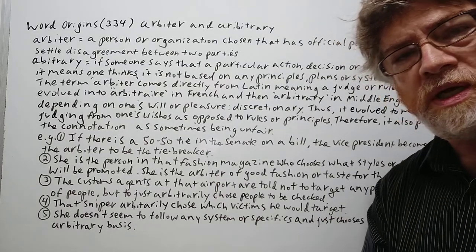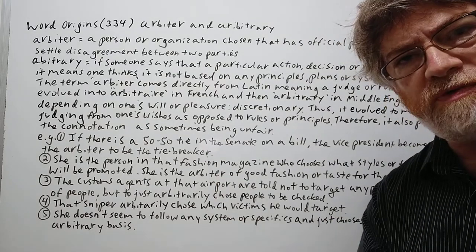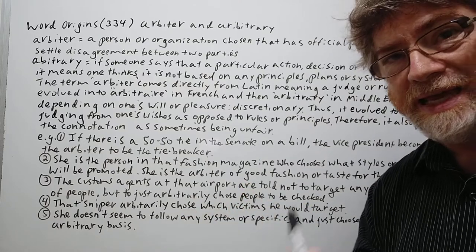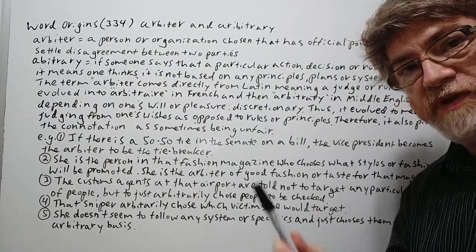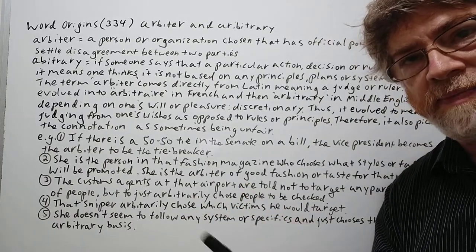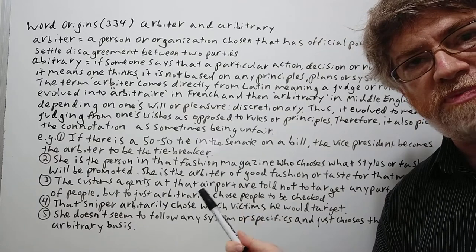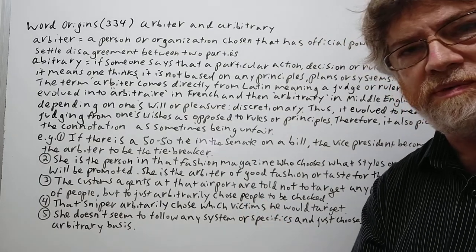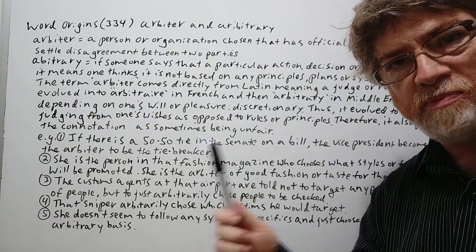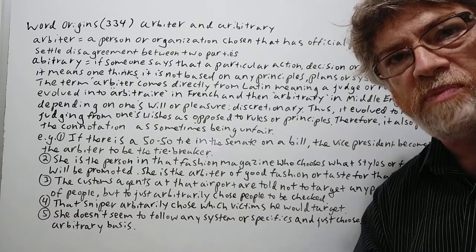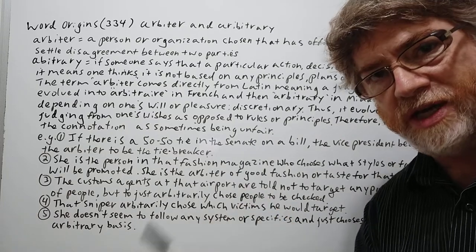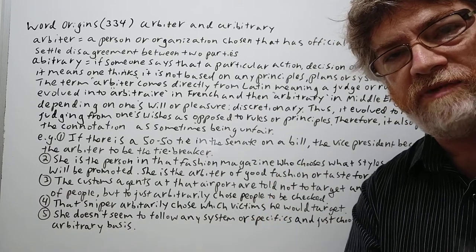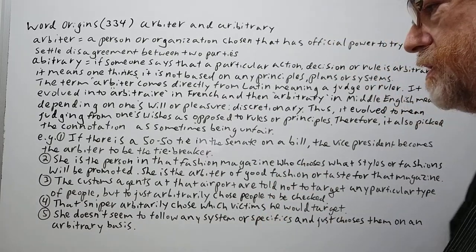In the US we have 100 senators — two for every state — so that's an even number, and it is possible to end up with a 50-50 tie. In order to break that tie, the vice president gets the vote. So whatever party is in power, they have a slight advantage in that way, because that is most likely the way the vice president will vote.